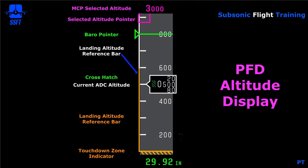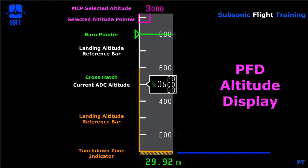At 500 feet above the reference field elevation, the landing altitude reference bar turns amber. Right now, with the reference field elevation at 100 feet and the aircraft at 600 feet, you can see it starting to change from white to amber. The current ADC altitude is enclosed in a box — in this case showing 500 feet. A small green crosshatch next to the number indicates you're below 10,000 feet, acting as a warning so you don't misread the altitude. The touchdown zone indicator is marked by crosshatches with an amber line, and the altimeter setting is displayed underneath the altitude display.